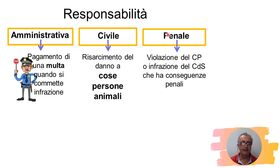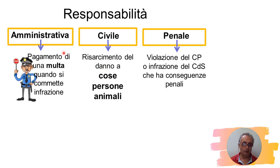Un esempio per comprendere bene: se passo con il rosso ho la responsabilità amministrativa. Se oltre a passare con il rosso ho anche provocato dei danni in un incidente, avrò anche la responsabilità civile. Possono essere contemporanee queste responsabilità, ma separate, cioè non hanno legami tra loro: una responsabilità è indipendente dall'altra.